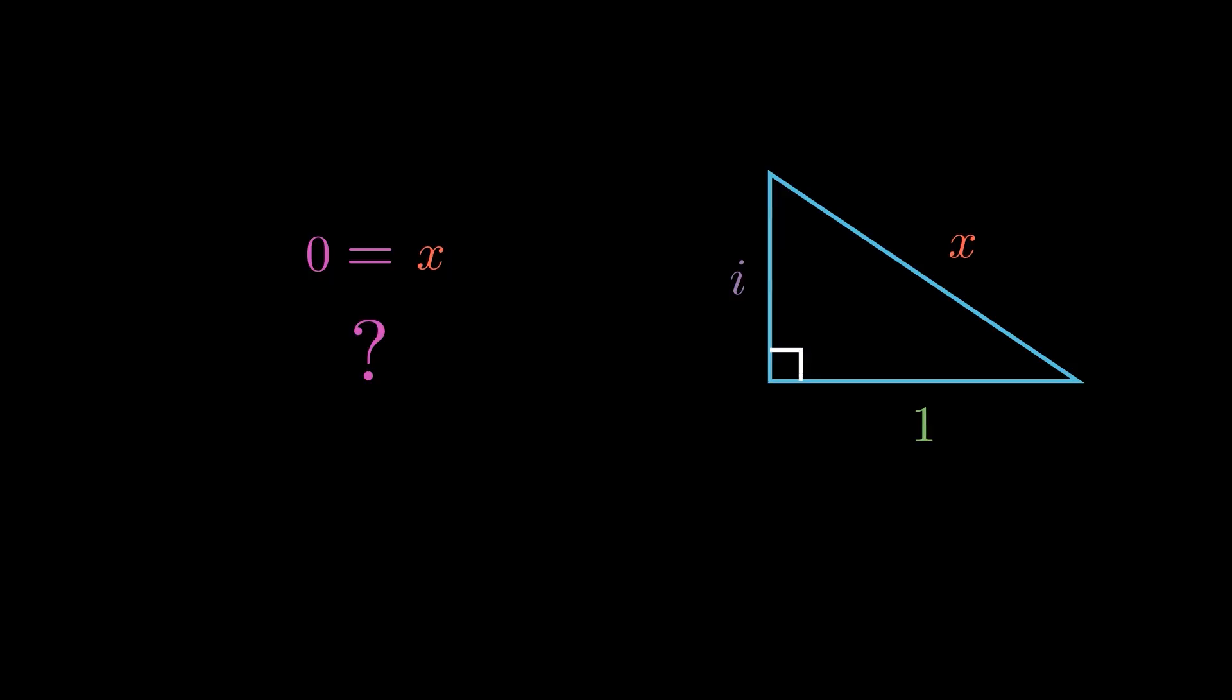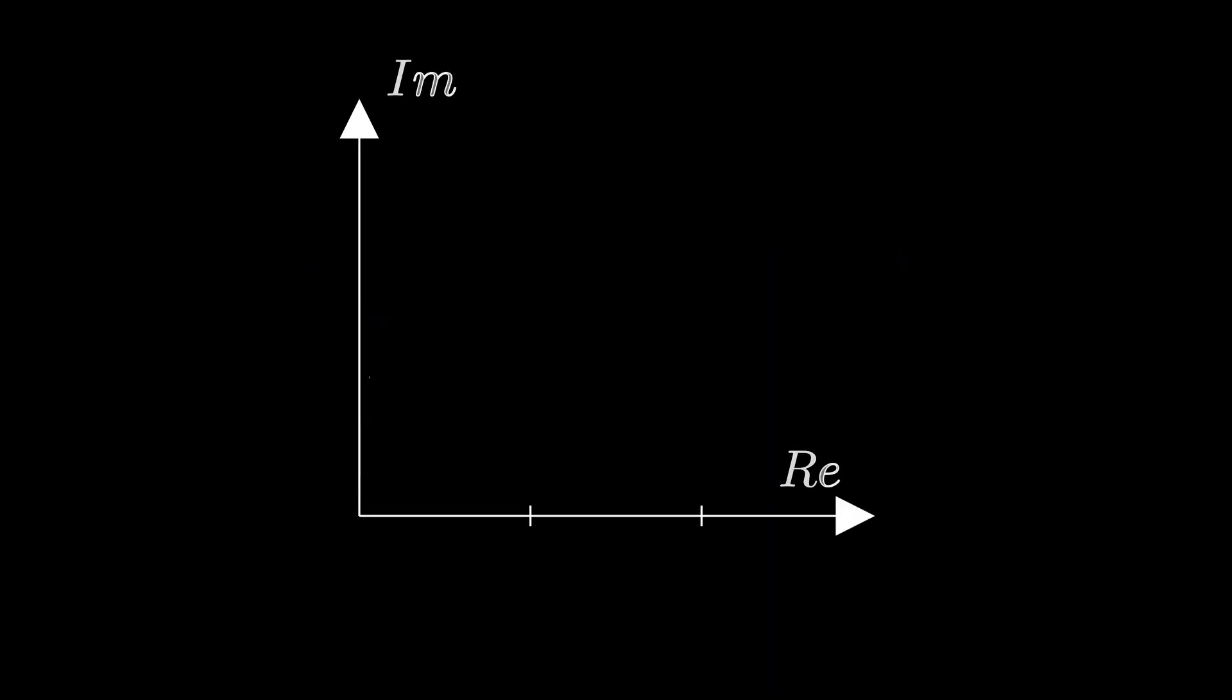So, what went wrong? The answer is actually quite simple. Let's first of all draw the triangle again, but this time, we'll form it from three points in the complex grid.